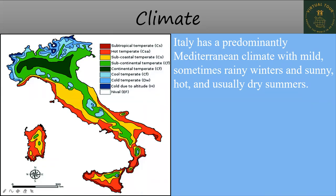The shade slightly lighter than dark blue has cold temperate climate. The dark green and light green represent continental and subcontinental temperate zones. The highest temperature zone is represented in red and maroon — those are the hot temperate areas.